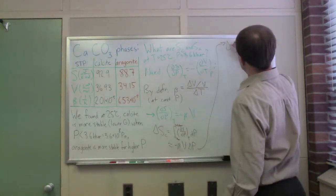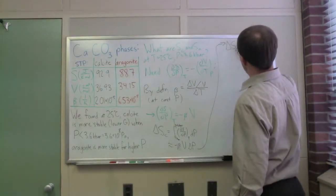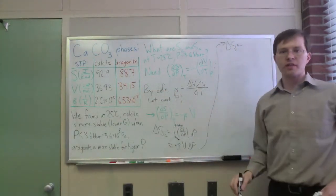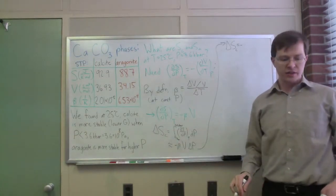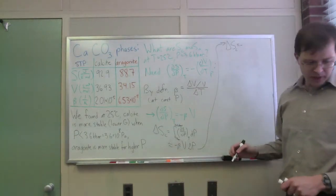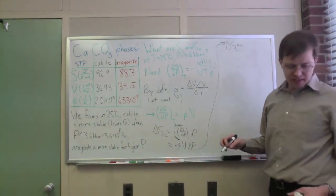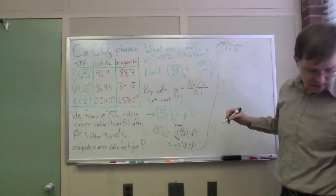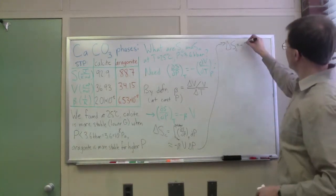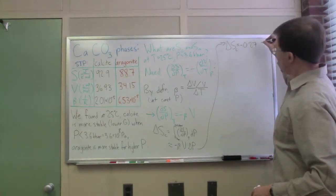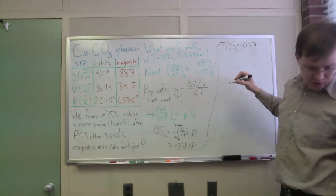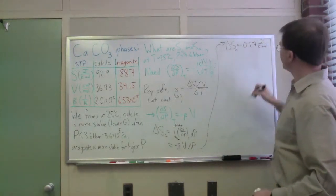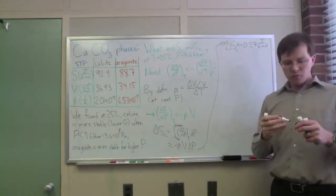When I do that, I can put this together—I'm not going to multiply in front of you—I end up getting negative 0.27 joules per Kelvin per mole. By the exact same reasoning, I can do the same thing for aragonite.